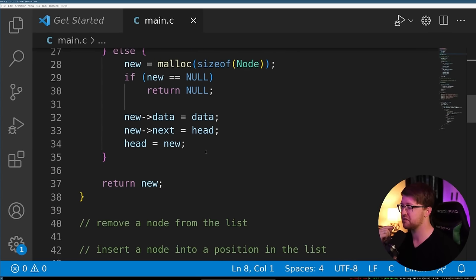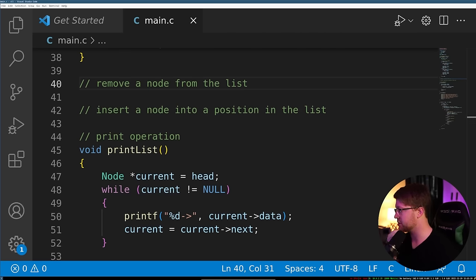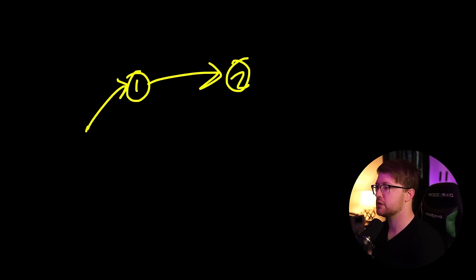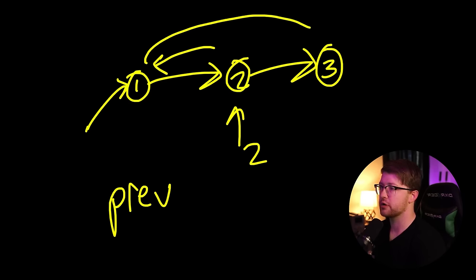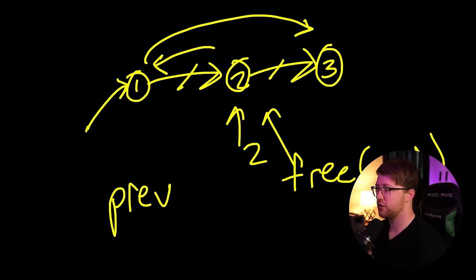Next, we want to do the remove operation on a linked list. Let's draw it out. We have our head pointing to elements one, two, and three. We are going to remove element two. We have to walk the list and track a previous pointer — when we find element two, we make the previous pointer point forward to the next pointer, effectively removing the links. Then we free that node.